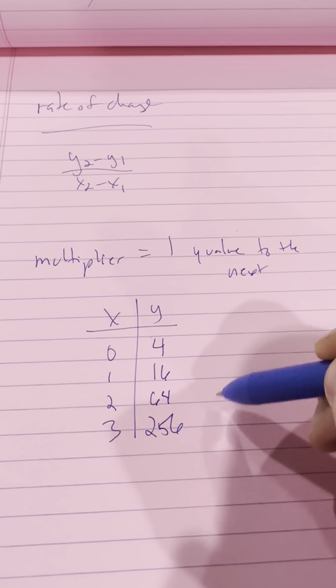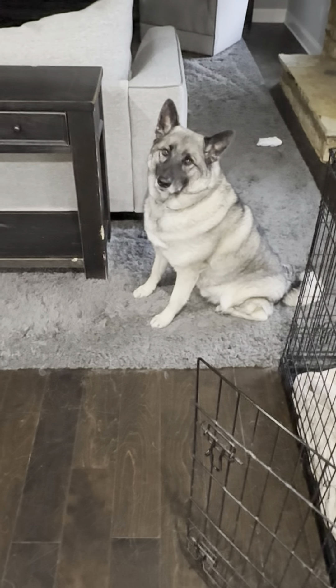When we say the word multiplier, we mean how did you get from one y-value to the next? For example, let's say I gave you this table. The x-values are 1, 2, 3 and the y-values are 4, 16, 64, 256. The multiplier is four, because four times four is 16, 16 times four is 64, and 64 times four is 256. The initial value — the starting amount — was four. So that's how that goes.